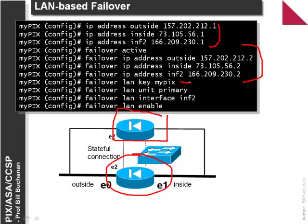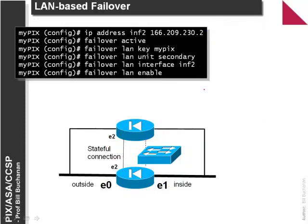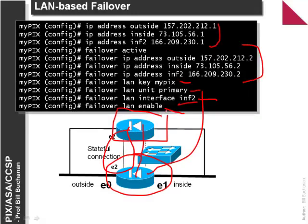We then define a shared key between the two devices, whether the unit is primary or secondary — in this case we're configuring the primary — and where the LAN interface is, in this case INF2. We then enable LAN failover. On the other device we define it as secondary and it should automatically get the IP addresses when we write the configuration. The other device will take over these IP addresses on failover.